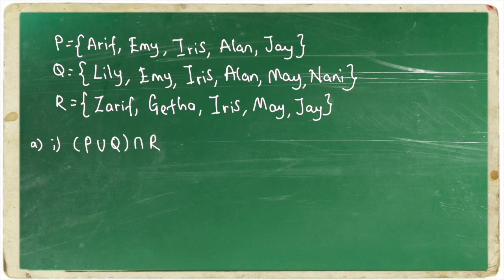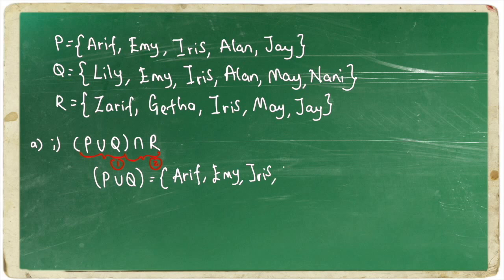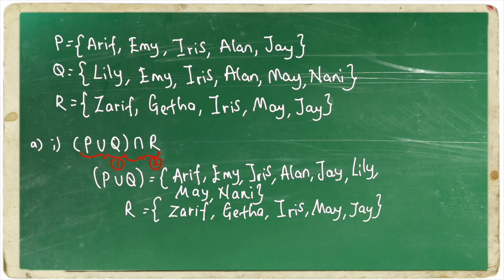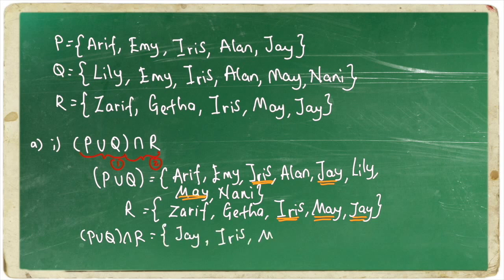To solve the first question, we need to solve the one in the bracket first and then any operation that comes later. The first operation is P union Q. We know that union is you combine all the elements of P and Q, which are Arif, Amy, Iris, Alan, Jay, Lily, May and Nani. And then, we know that R has elements Zarif, Gita, Iris, May and Jay. The second operation is intersect. We know that intersect means we find whatever common element which are Jay, Iris and May. So, the answer for the first question is Jay, Iris and May.